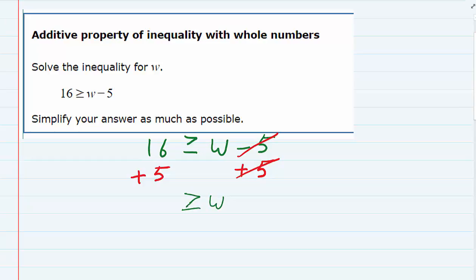And on the left hand side, those will add 16 and 5 to be 21. So we have gotten the w by itself and this is as far as I would go. I would stop right here.